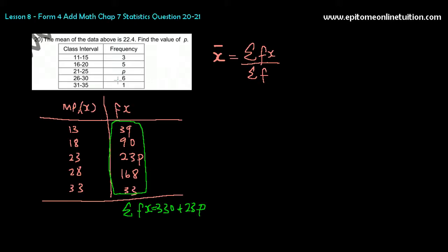And now what about the total frequency? So you can actually do the formula now. The mean is given to you, it's 22.4.